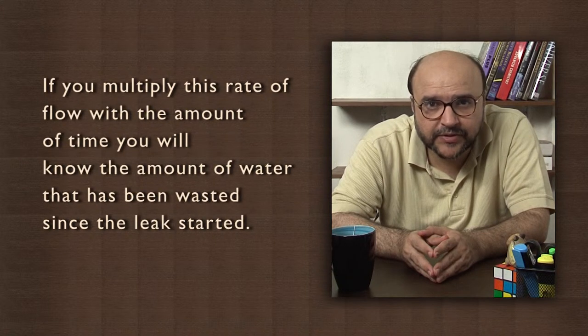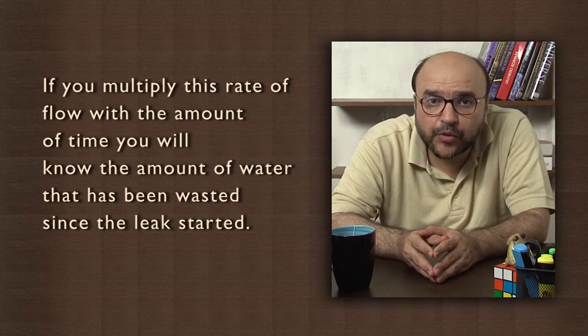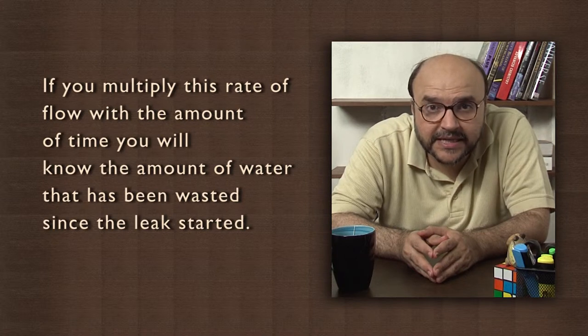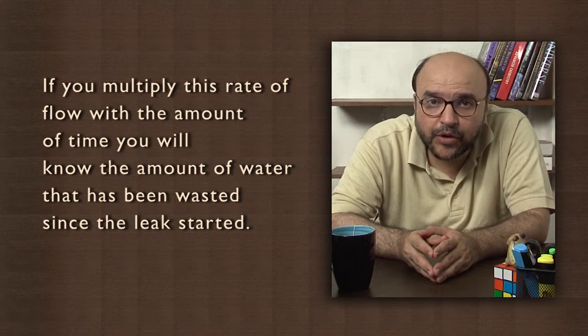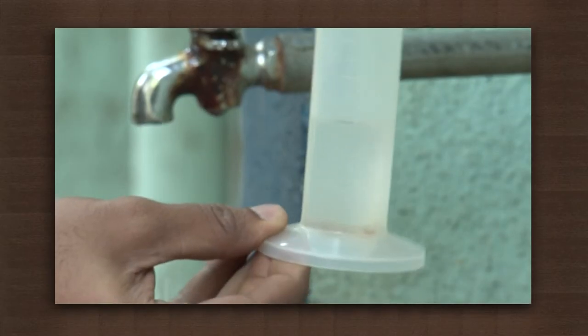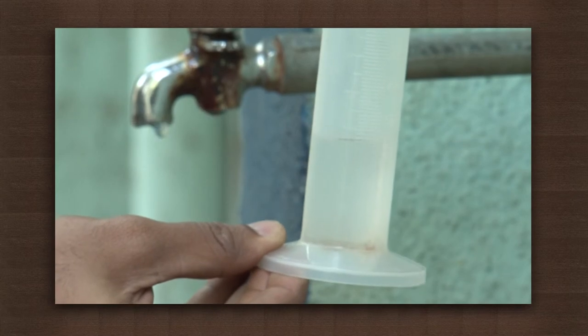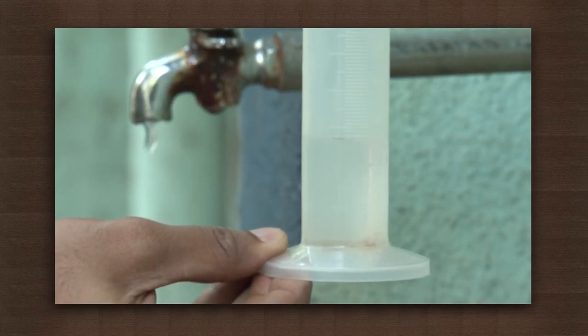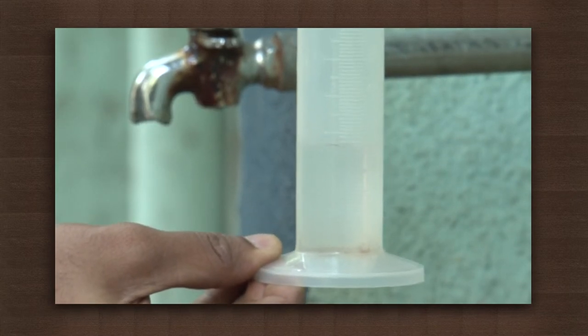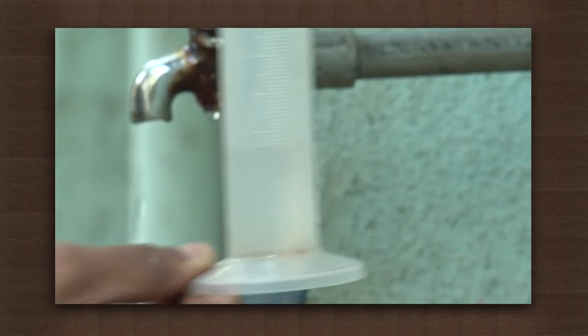If you multiply this rate of flow with the amount of time, you will know the amount of water that has been wasted since the leak started. In this case, the water wasted was 26 milliliters and the rate of flow was 0.87 milliliters per second. If you think that is less, well, it means more than 3 liters in an hour.